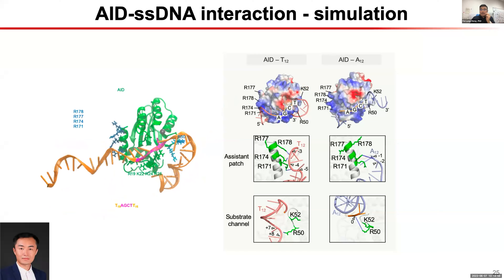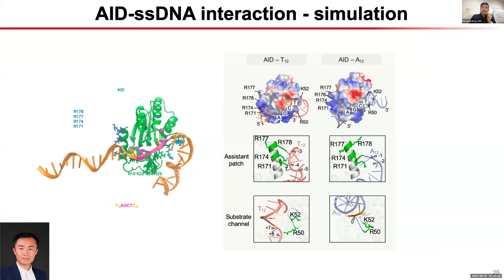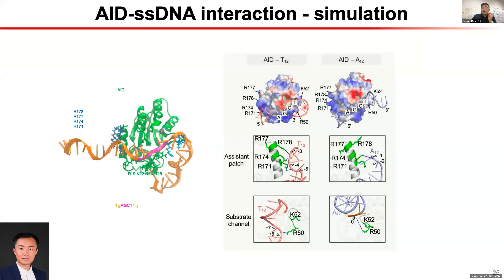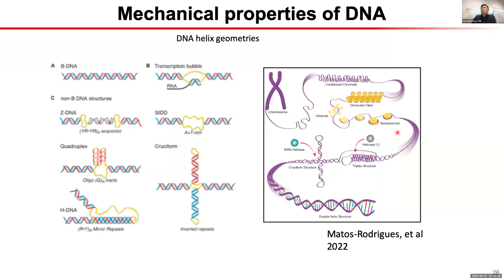The conclusion from our molecular dynamics simulations: the poly-dT substrate can wrap around the surface of AID, while the poly-dA substrate tends to be very rigid and cannot wrap around the protein. This may explain why the poly-dA substrate always shows low activity in our biochemistry assay. So what determines these DNA mechanical features? Looking at the properties of DNA, when talking about mechanical features, most of us are familiar with DNA helix geometry — most double strand DNA is in B form.